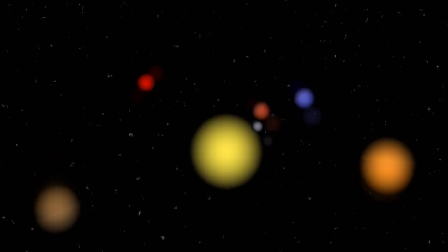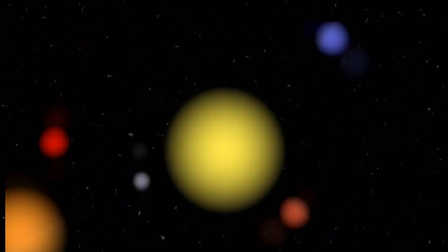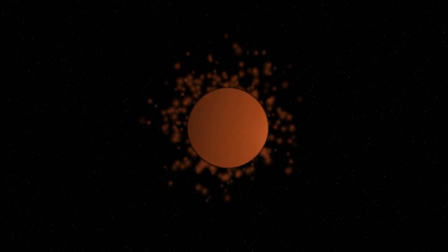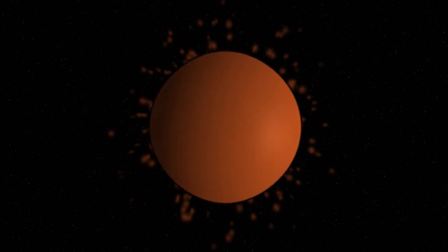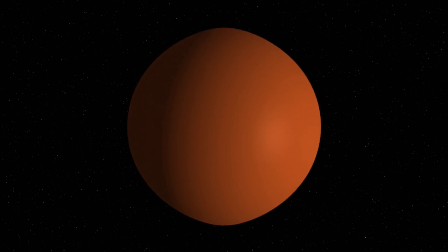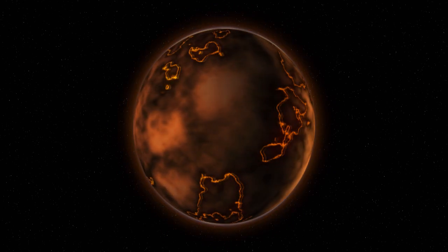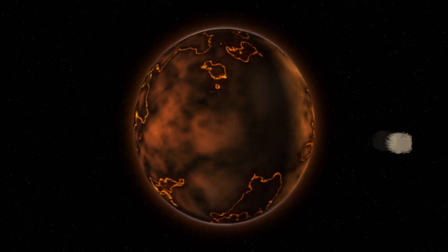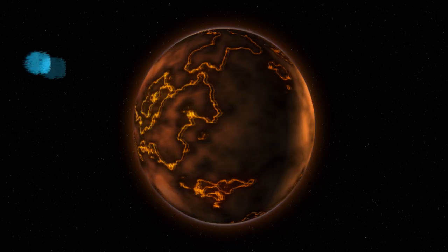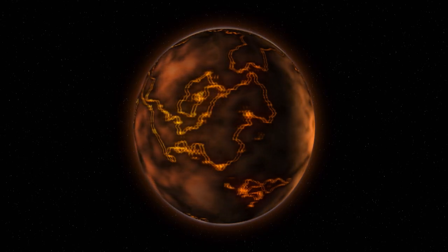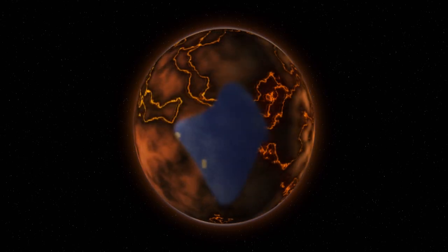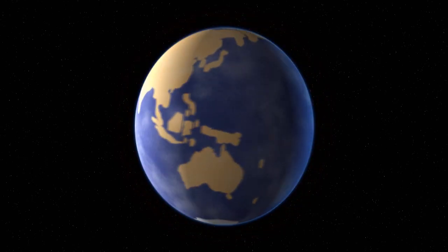We call the star and the planets around it a solar system. Our planet, the Earth, formed from the dust of older stars at about the same time our sun formed, about four and a half billion years ago. The young Earth was hot with many volcanoes. Asteroids, which are rock, and comets, which are mostly ice, fell on the Earth. After a while, the Earth cooled and large oceans formed.